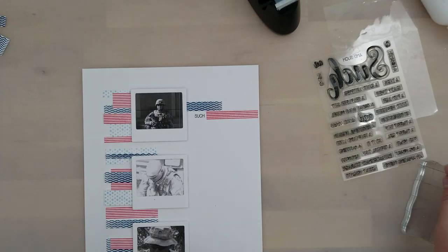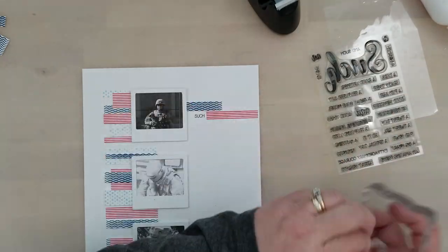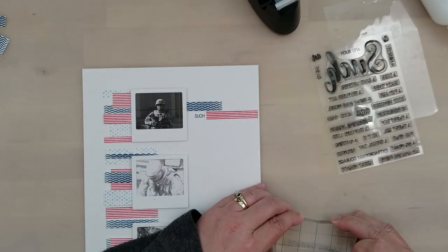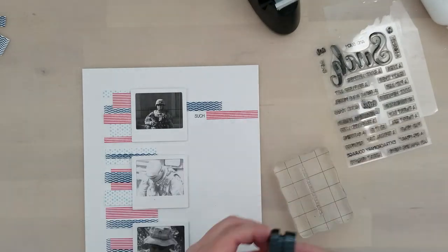Now once we have all the strips in place, I'm going to go ahead and adhere my photos. Okay, so I'm ready to stamp my sentiment. I did add a few more strips to the right side of the paper. You'll be able to see those in a photo at the end of the video.